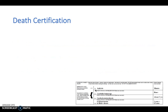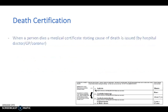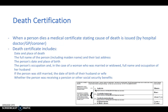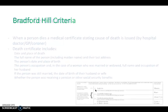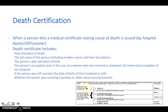The death certificate is equally important as birth registration. When a person dies, a medical certificate stating the cause of death is issued by a hospital doctor, a GP, or a coroner. The death certificate includes various details. Pay note to the picture at the bottom — it tells you the immediate cause of death, and then you can add a secondary or tertiary cause of death which has also contributed to the immediate cause.